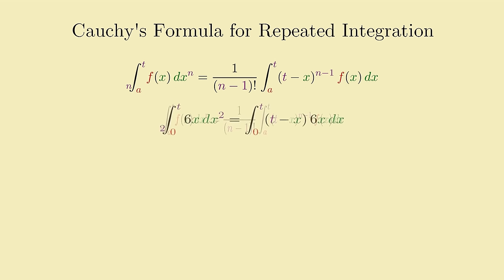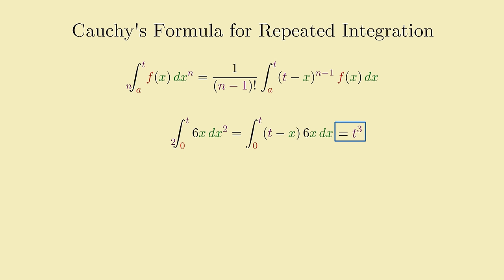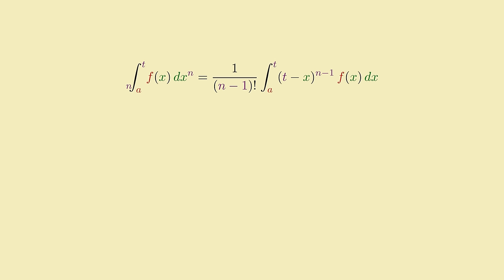For example, plugging in f of x equals 6x into the formula with n equal 2 and lower integration bound a equal 0, the formula produces t cubed, the second antiderivative of 6x, just with x renamed to t because x was being used as the integration variable. This formula will be our ticket to defining a half integral, or really any fractional order integral.